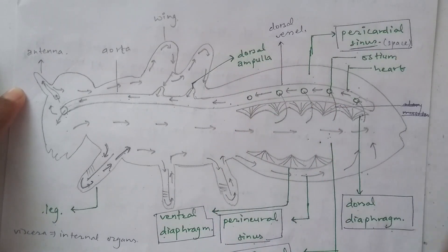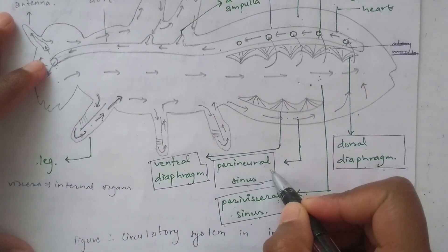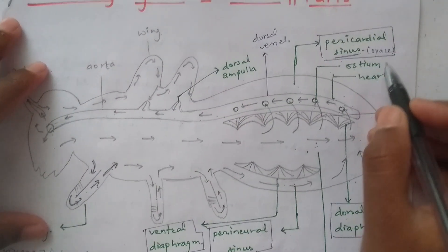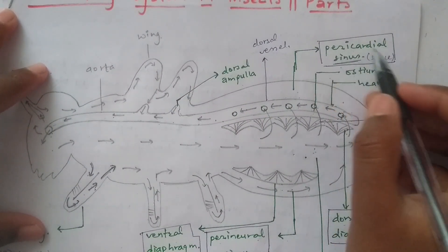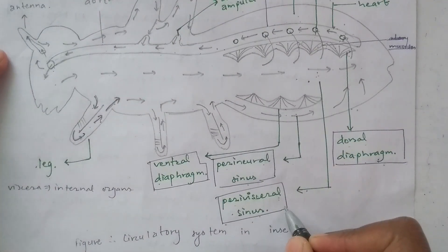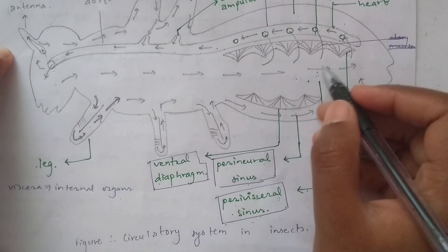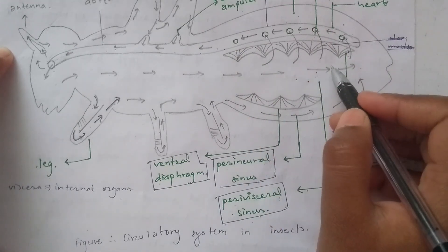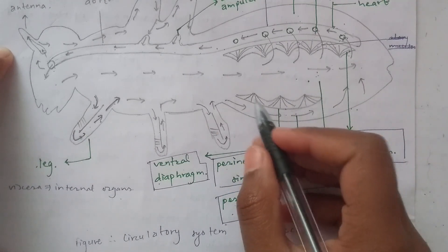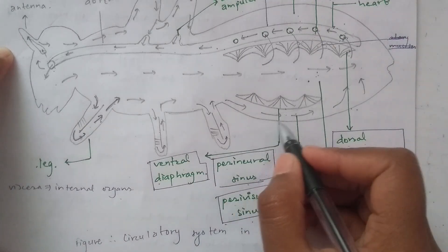We will identify the sinuses: the pericardial sinus, the perineural sinus, and the peribisceral sinus. A sinus is a space. The cardiac — that is, the heart — is located in the pericardial sinus. The peribisceral sinus contains the internal organs.